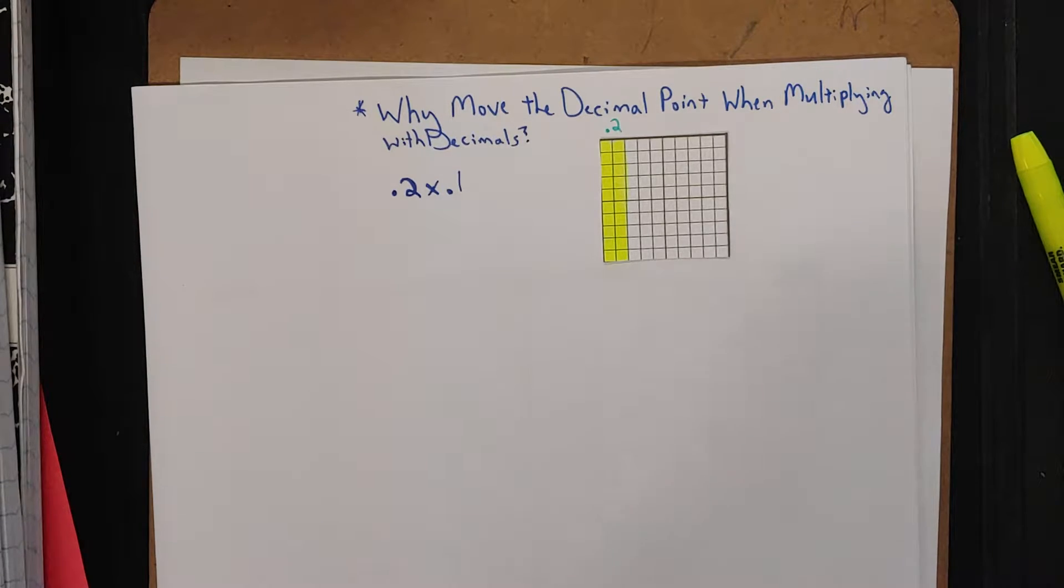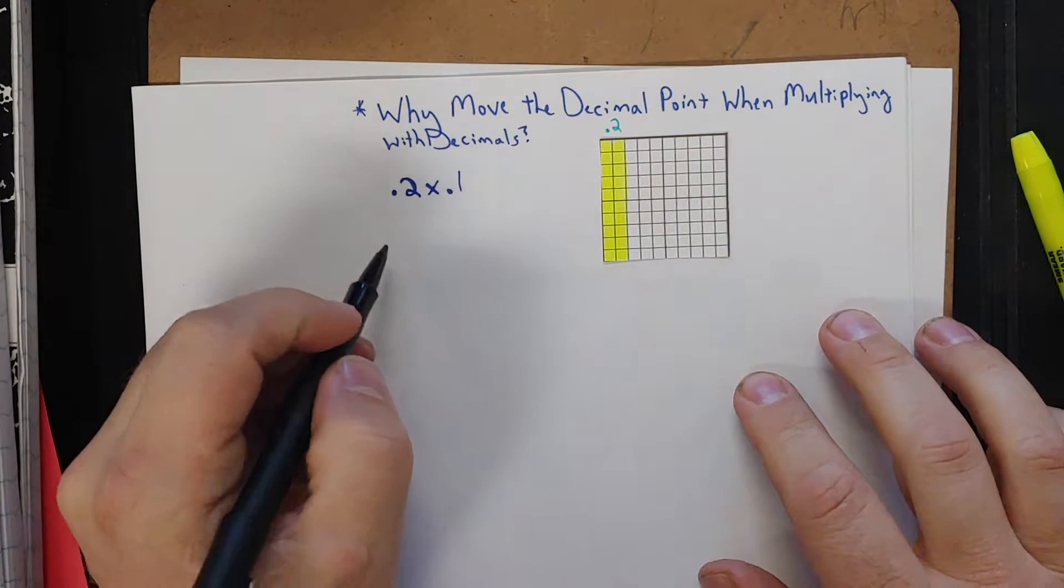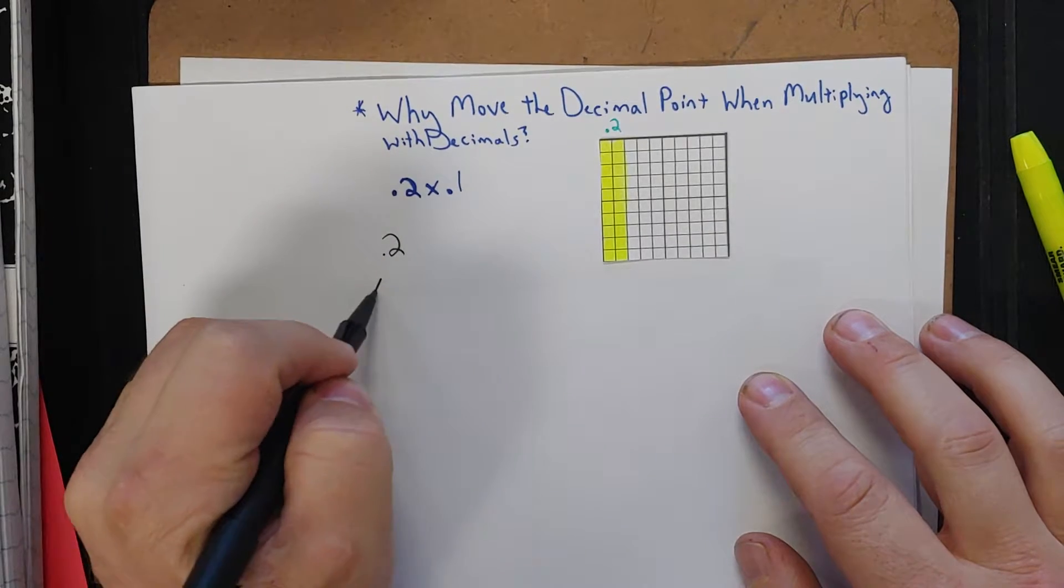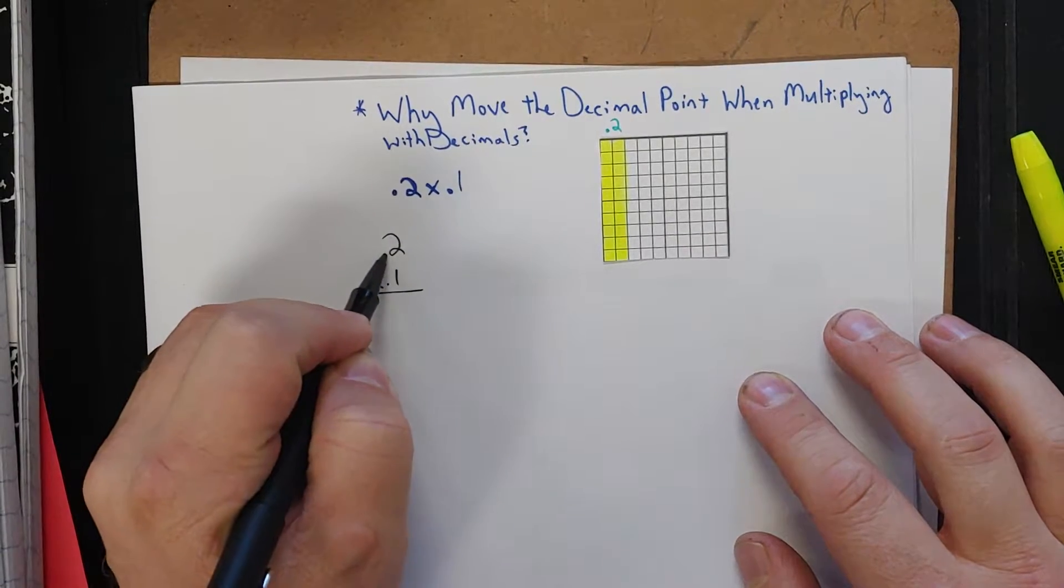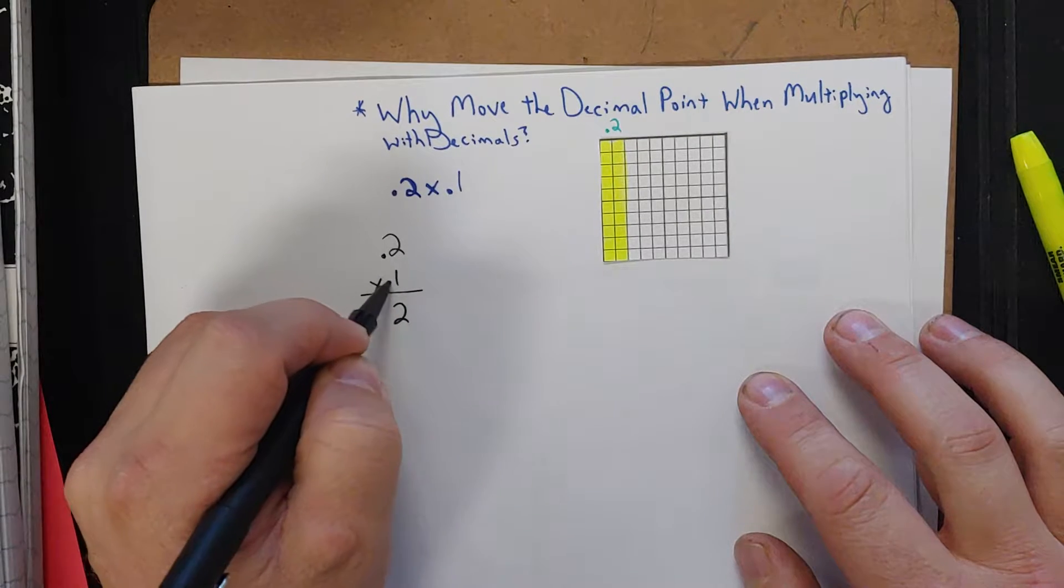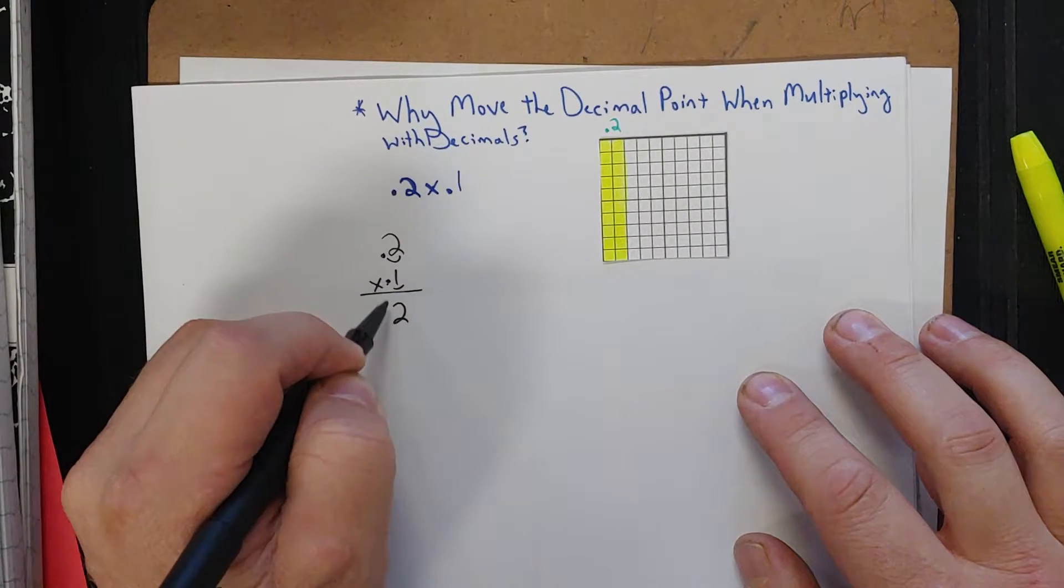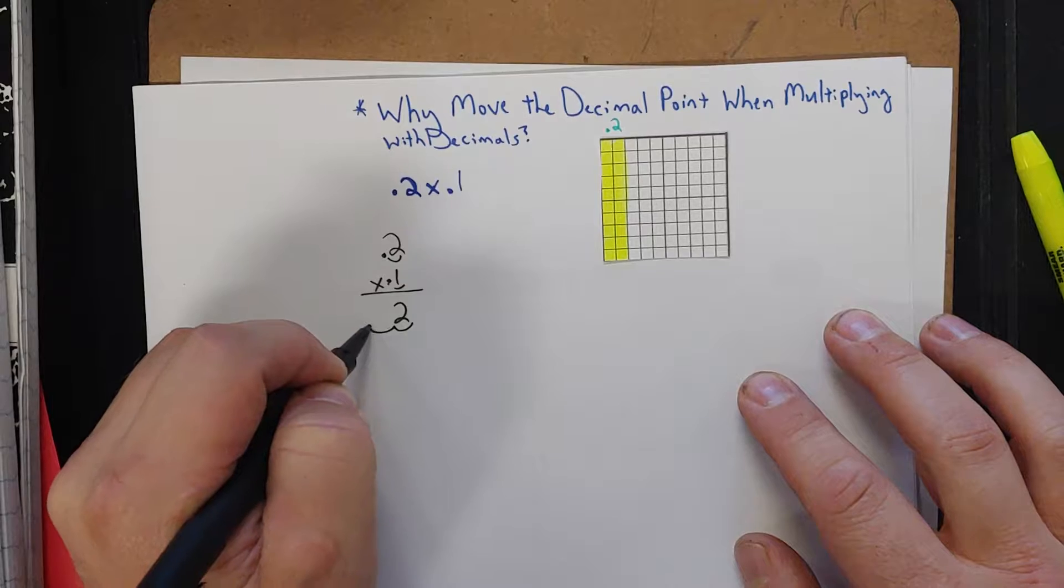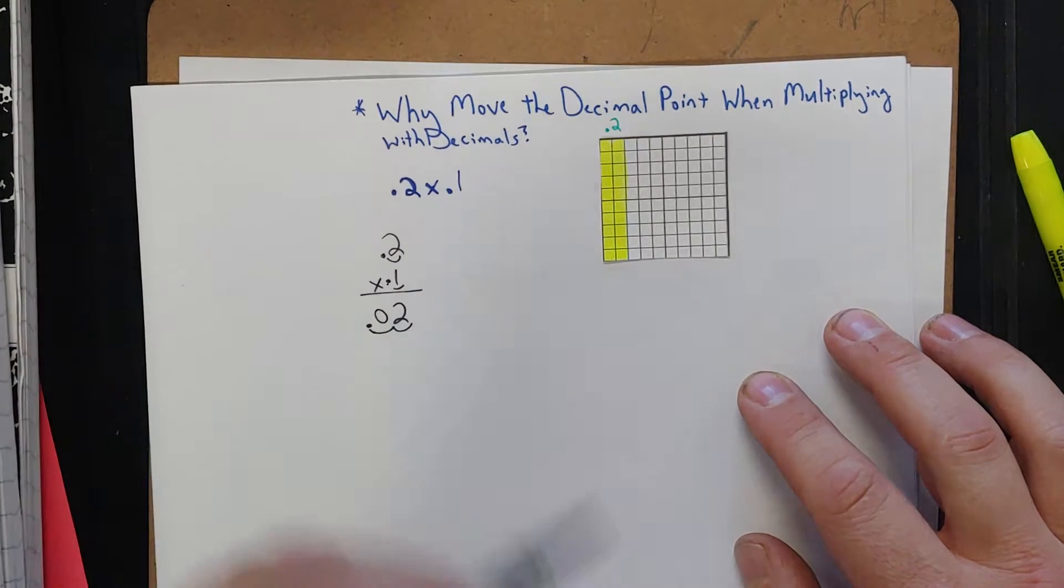What I mean by that is this. If you're multiplying 2 tenths times 1 tenth and you're just using the algorithm, 1 times 2 is 2. Well, 2 what? You're supposed to know that you should divide by 10, divide by 10, move that decimal over twice and make that two hundredths.